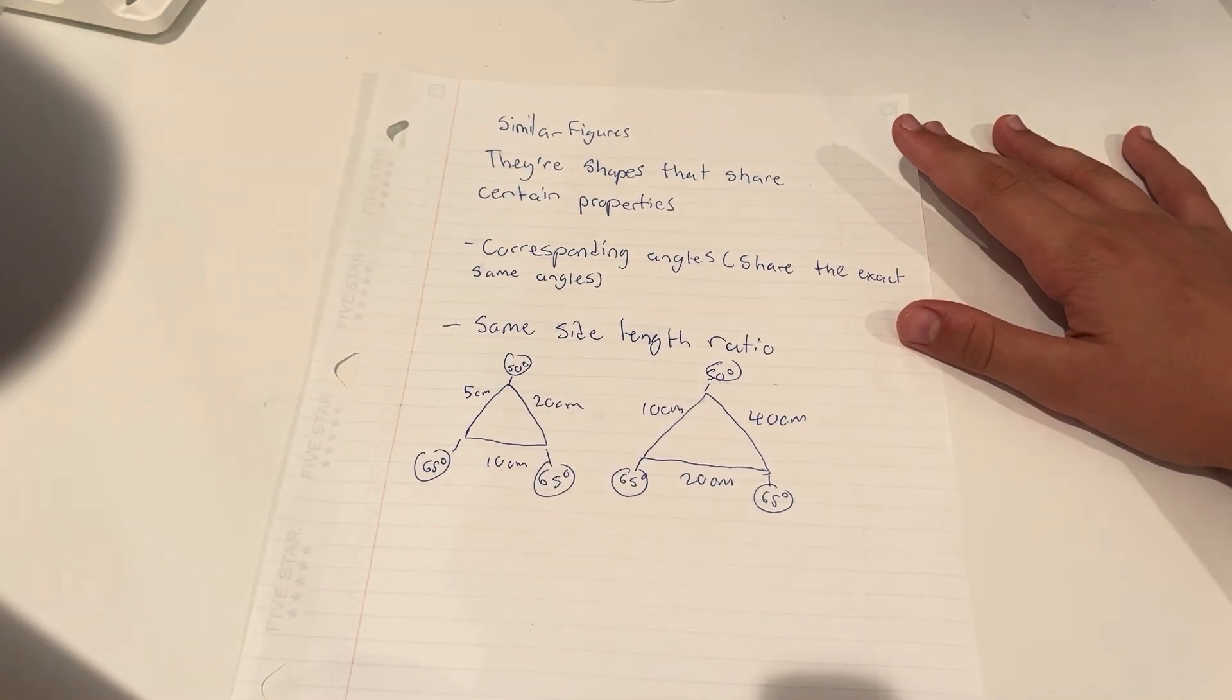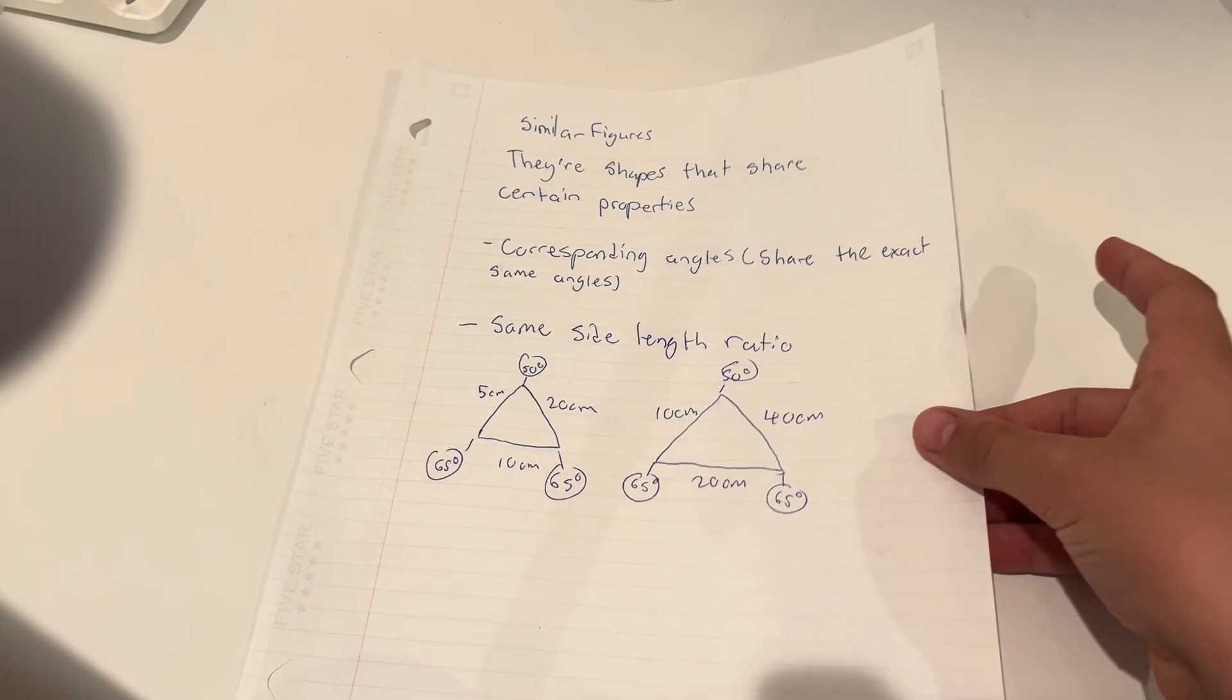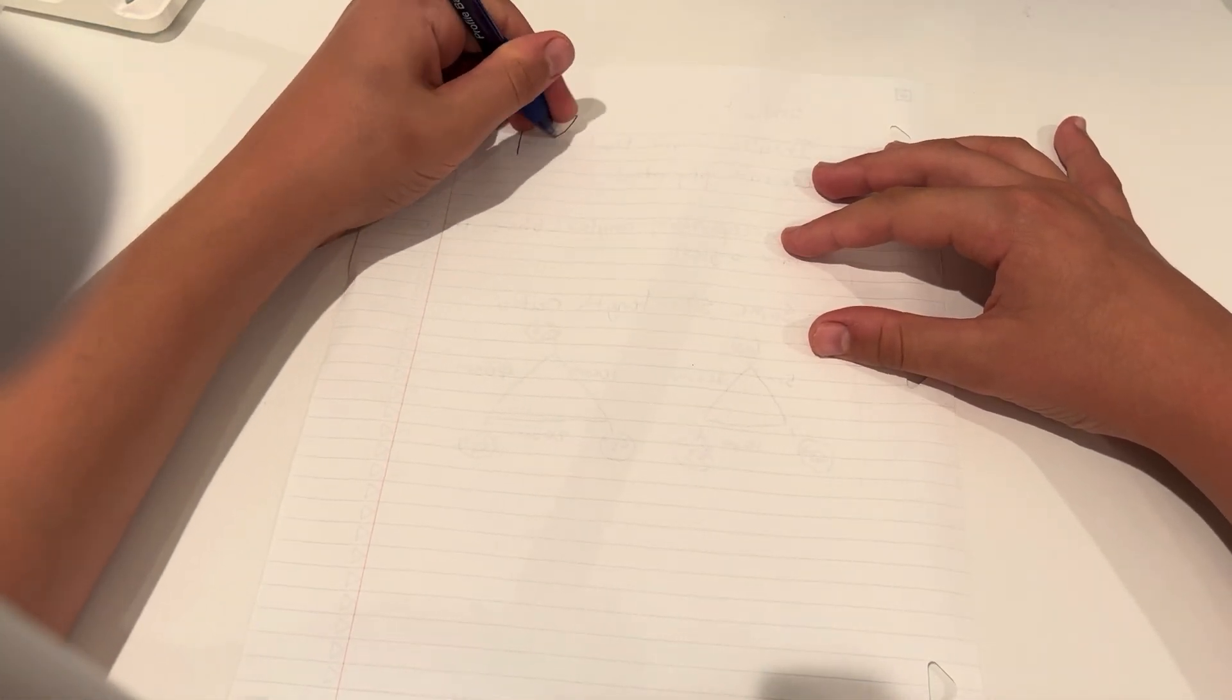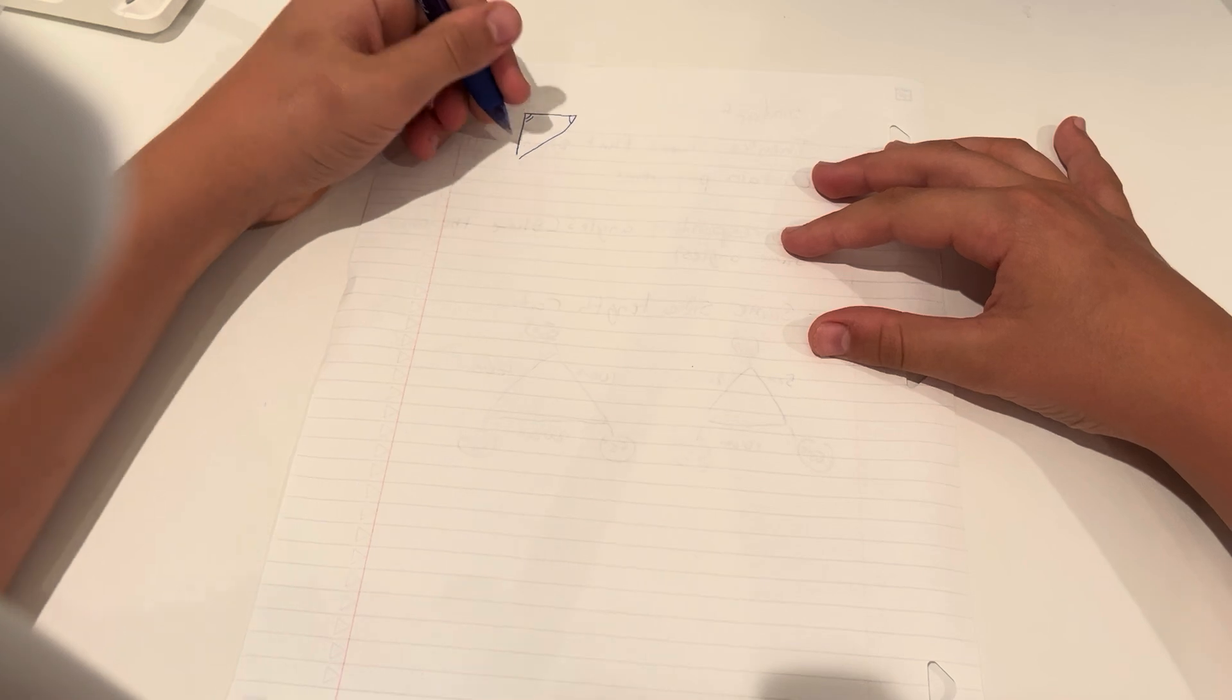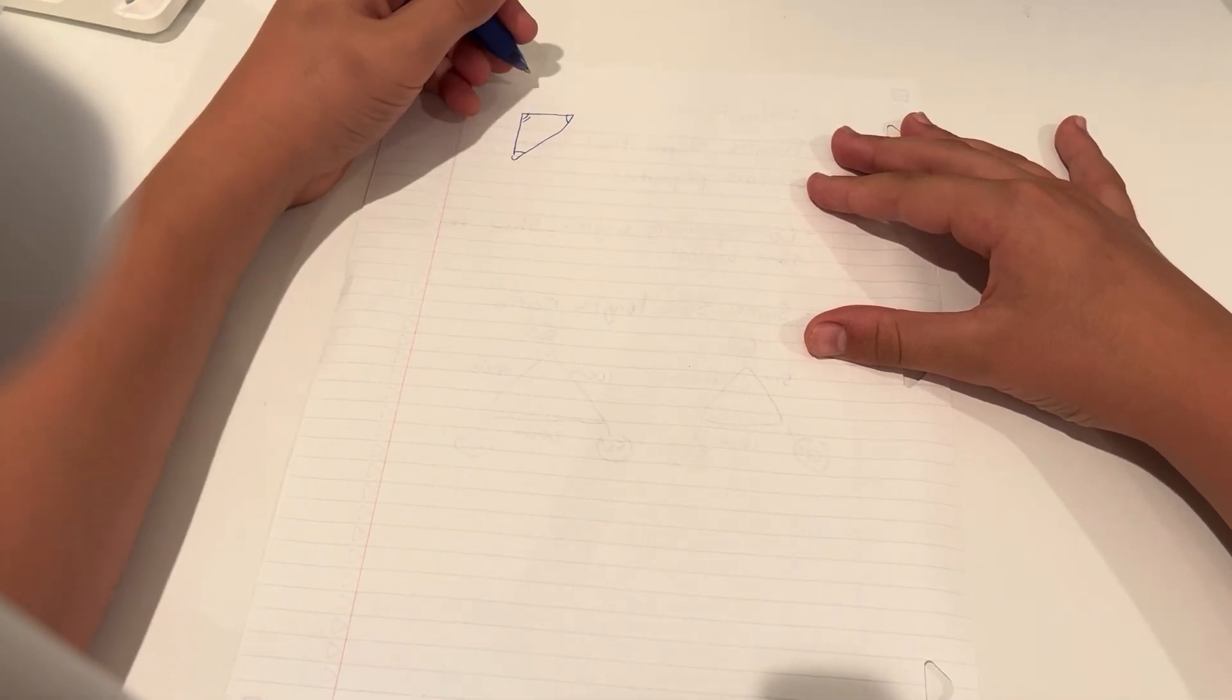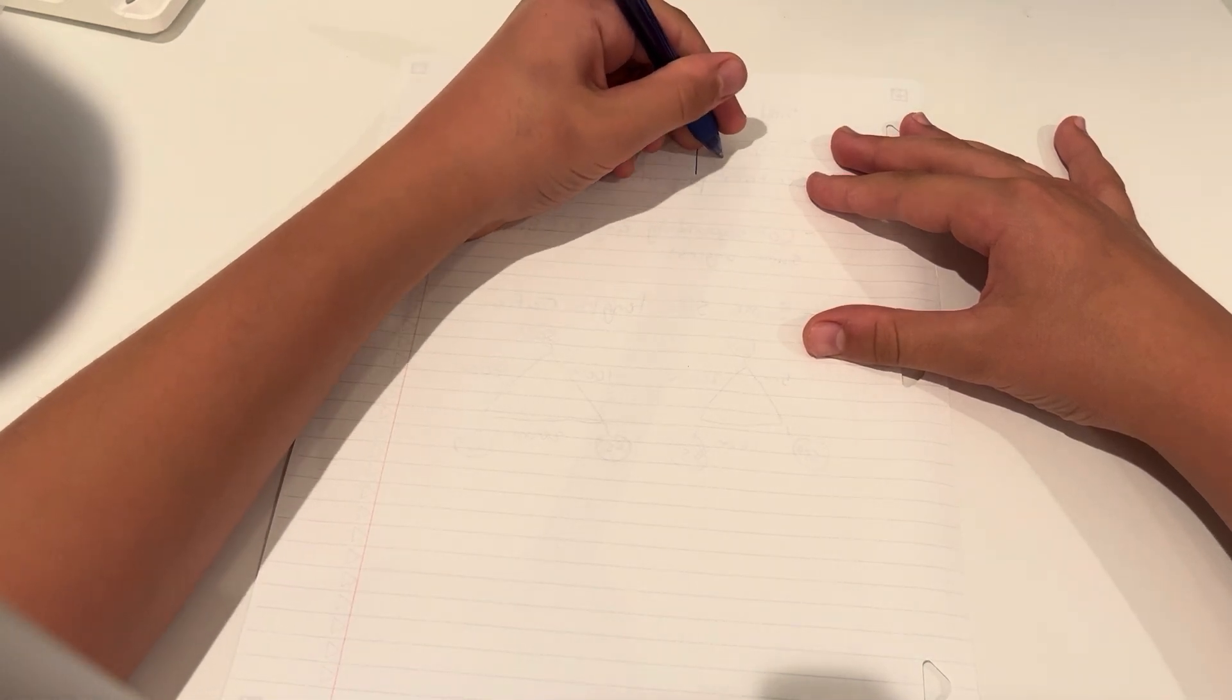Now, let's take a look at a figure and determine whether it's similar. So we have awesome triangles. All right. So here we have a triangle, and these two figures, we have figure A and figure B.